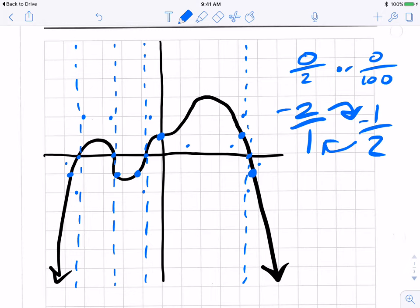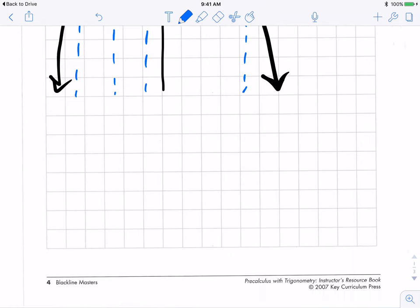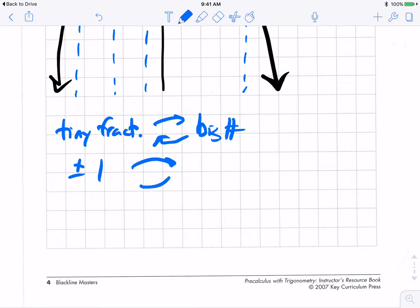So I hope what you're seeing here is that tiny fractions become big numbers, and big numbers become tiny fractions. So the principles here, if we sort of had to list this as principles, is that tiny fractions flip over into big numbers and vice versa. Plus or minus one flips over into itself. Positive one flips to positive one. Negative one flips to negative one. And all the zeros flip over into asymptotes and vice versa. Okay. So that's kind of the big, broad principles of graphing reciprocals.